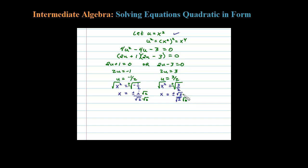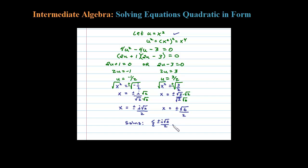Multiplying numerator and denominator by square root of 2, here's the final answer: x equals plus or minus i times square root of 2 over 2, and also plus or minus the square root of 6 over 2 — since the square root of 4 is just 2. So we get four solutions to the original equation: two are imaginary (±i√2 / 2) and two are real (±√6 / 2). I used u-substitution to solve that.